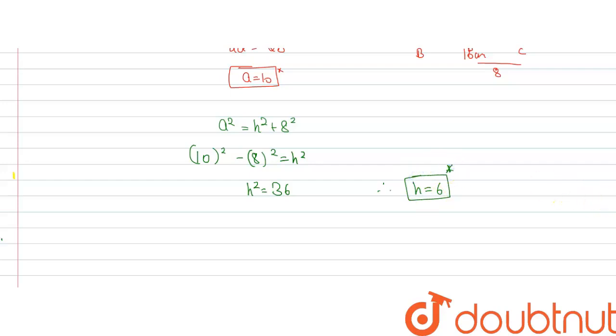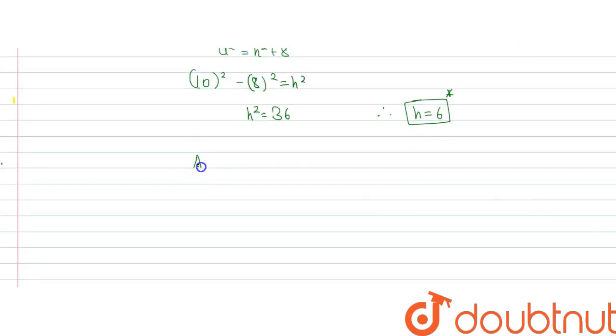Now we will find the area of the triangle. Area of triangle is given by half into base into height. We are already given the base which is 16cm and we found h which is 6. So we get 48.